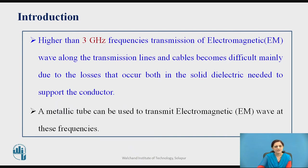At the highest frequency, it is not possible to transmit the signal through transmission lines and cables because losses will occur while transmitting these signals. Higher than 3 GHz frequency, it is not possible to transmit the signals. So to transmit the electromagnetic signal, a metallic tube can be used.